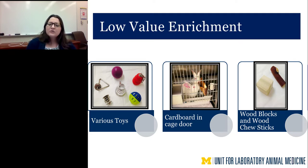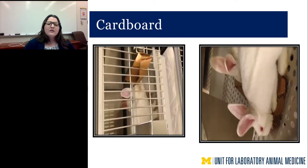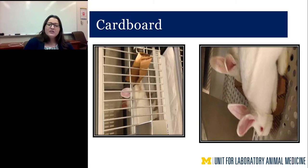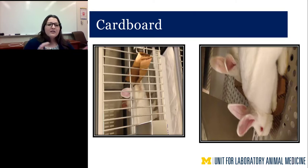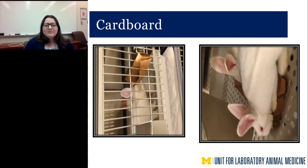Low value enrichment items are things rabbits can easily manipulate around the cage — toys, cardboard, wood blocks, wood chew sticks — items that provide value but won't hold long-term interest. Cardboard is one of our favorites: it's free, easily sanitizable, and quick for technicians. We take liner boxes, cut them into strips, autoclave them, roll them up, and stick them in the cage doors. The rabbits spend time trying to get the cardboard in, then scratch it up and make a big mess with it, having a great time. Quick for staff, costs nothing — a perfect enrichment item.